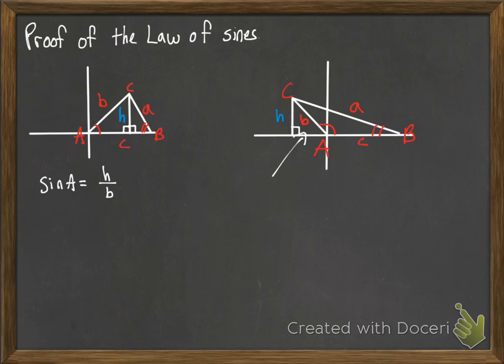And so sine of A would be opposite, H over hypotenuse of the little reference triangle there, B. And in both cases now we can solve for H and get H is B sine of A in either case.